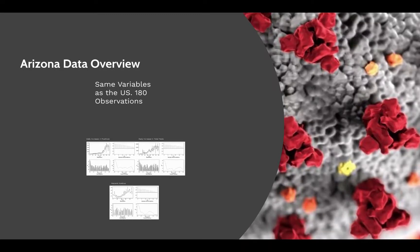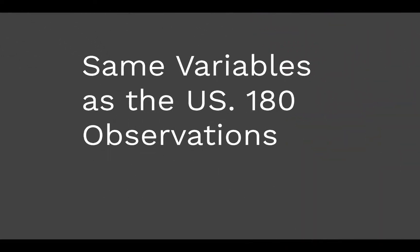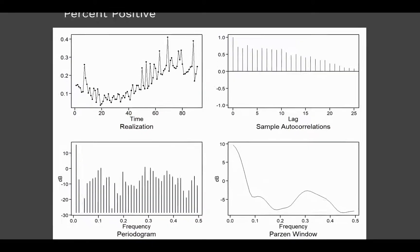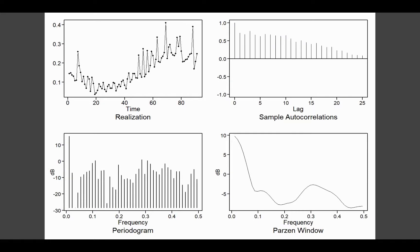And here you can see Arizona, we use the exact same clean methodology. Here we had 180 total observations and we can see the daily increase in positives as well as total tests which we divided to create positive percentage for Arizona.